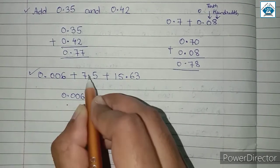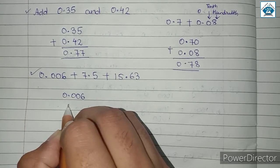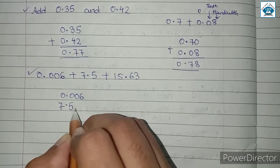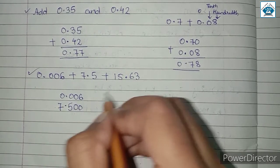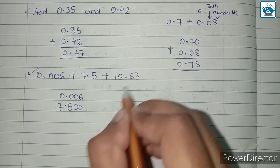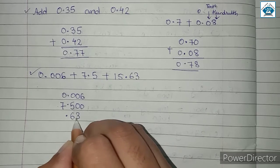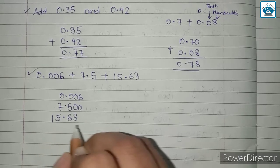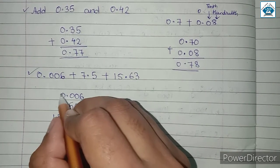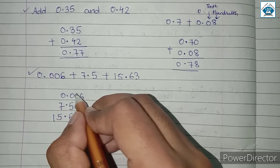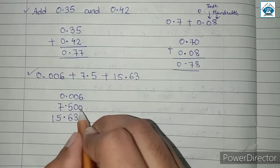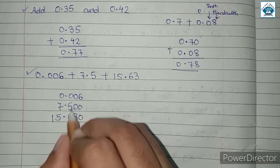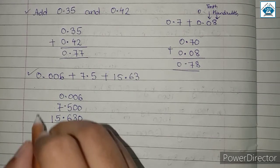Point under point. For 7.5: to the left of the point we have 7, to the right we have 5. The blank spaces are filled with 0. The third number is 15.63, so after the point we have 6 and 3, and before the point we have 15. Now we have ones, then point, then 10th, 100th, and 1000th place values. For 7.5, the 1000th place is missing, so we add 0 there. For 15.63, the 1000th place is also missing, so we add 0. Now we can simply add these 3.